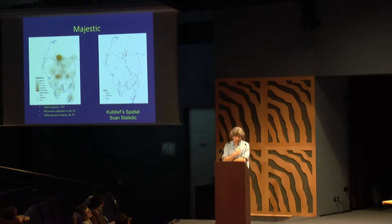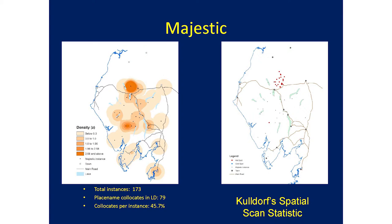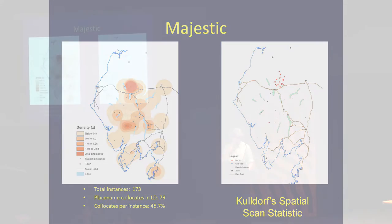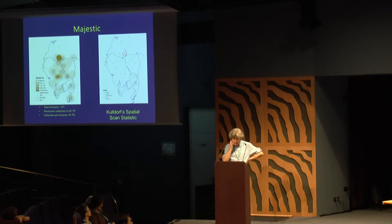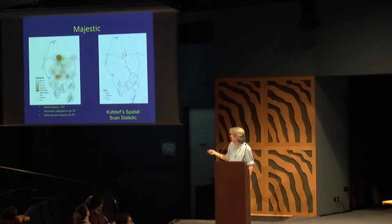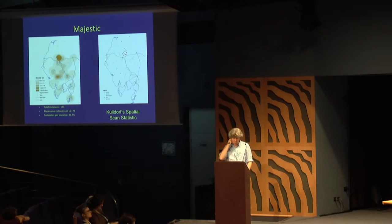With 'majestic', we get a really quite different pattern. There's a major cluster and hot spot very much centred on the mountain of Skiddaw, one of the highest mountains in the Lake District, which looms over the popular tourist town of Keswick — so it's seen a lot and clearly is frequently described as majestic. The other majestic place is the Duddon Valley down here, which also stands out as a hot spot associated with 'majestic'.